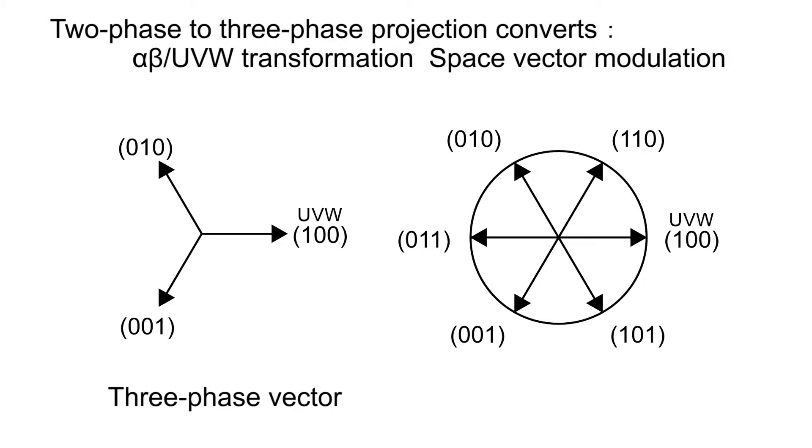Three-phase alternating current which controls a motor consists of three sine waves which are shifted by 120 degrees each other. Then, three-axis shifted only 120 degrees are prepared first. Using the three-dimensional vector notation, each axis is set to 100, 010, and 001. Next, each axis is extended to the counter-direction from the starting point, the origin.